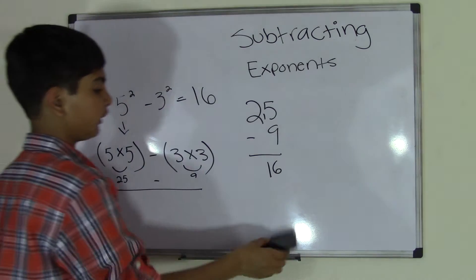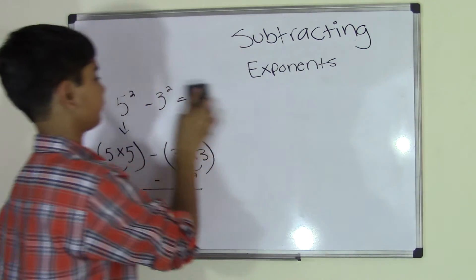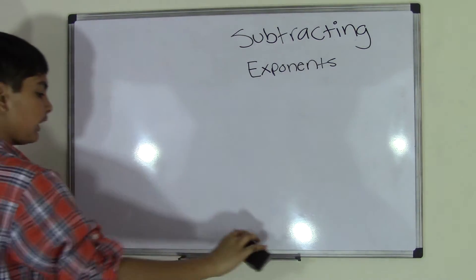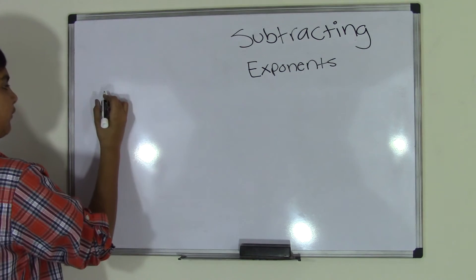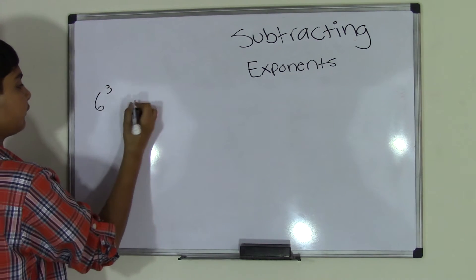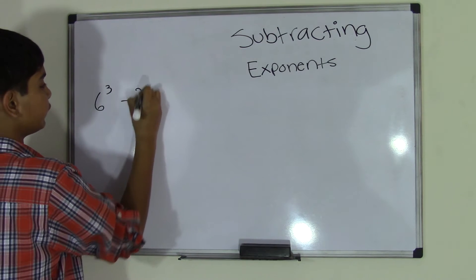Let's go ahead and do another problem. This time we have three numbers: 6 to the power of 3 minus 2 to the power of 2 minus 3 to the power of 3.